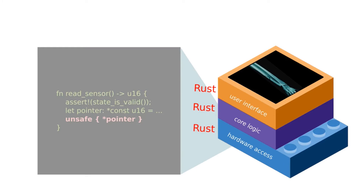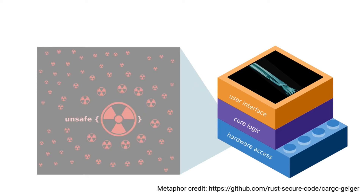On the other hand, since unsafe Rust allows using low-level operations, the entire system could be implemented completely in Rust. Therefore, unsafe Rust is similar to radioactive materials — dangerous, because the compiler does not help the programmer, but in some cases unavoidable.